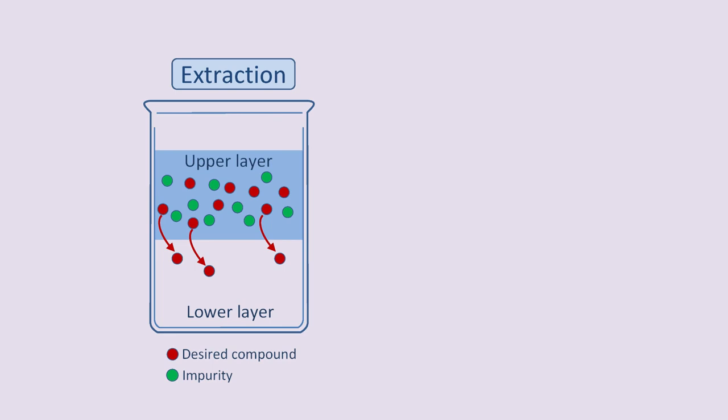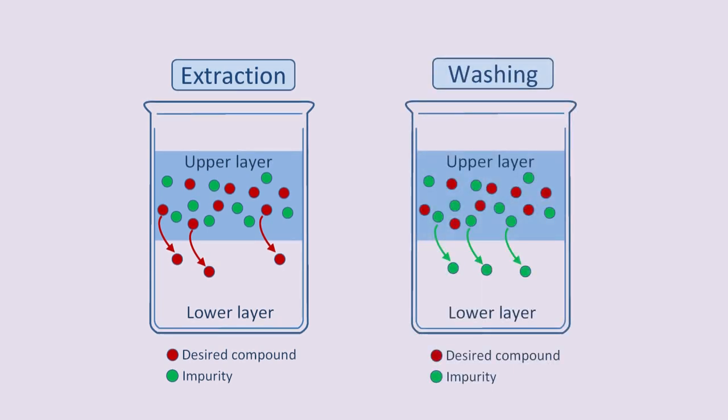It's worth noting at this stage a similar process to extraction called washing. Shown here, it is actually the reverse of extraction, where impurities are removed from the first solvent to the second solvent, leaving the desired compound in the original solvent. More often than not, work-up procedures in the organic chemistry lab involve both extraction and washing, although they may collectively be referred to as solvent extraction.